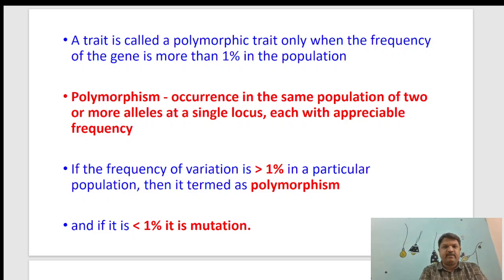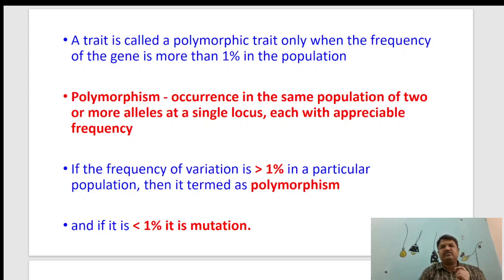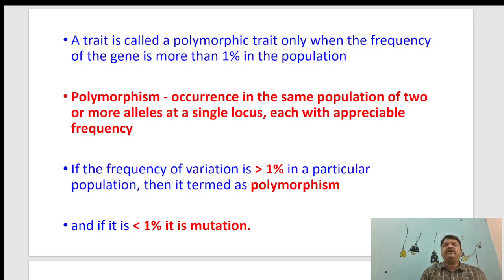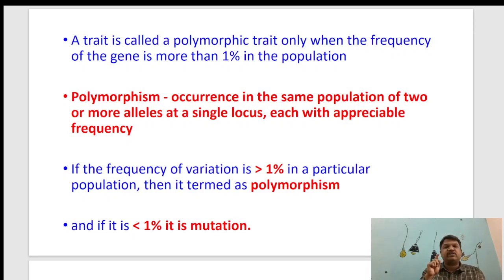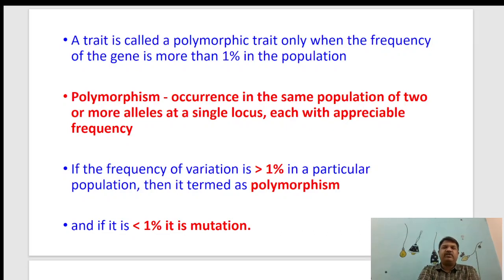We are live now. Polymorphism — to be called polymorphic, a trait has to have a frequency above one percent. That means it must be present in at least two individuals; one individual will not be considered polymorphic. If the change has been due to mutation, it is not to be called polymorphic, because most mutations are harmful.